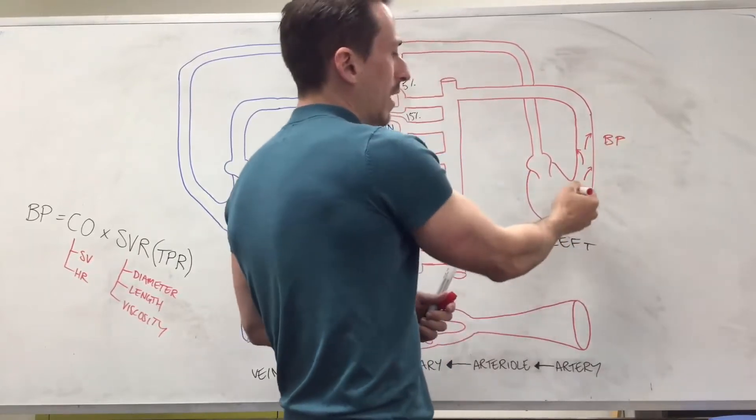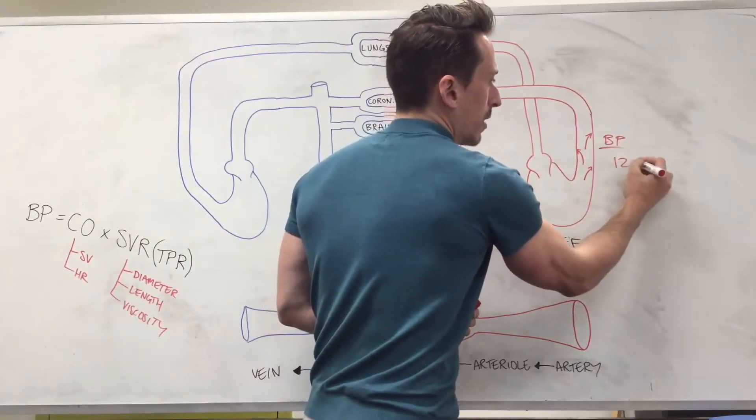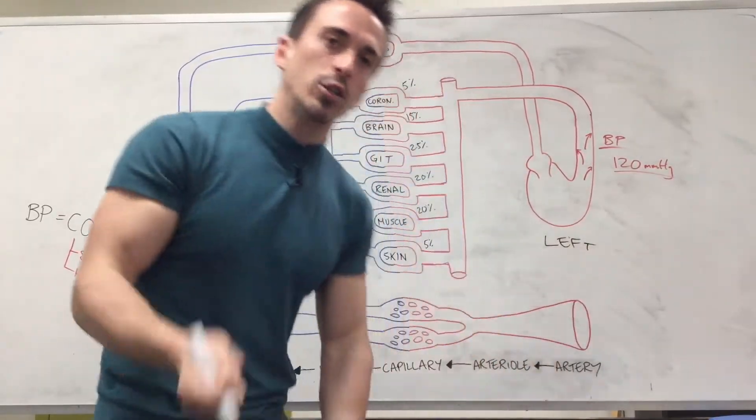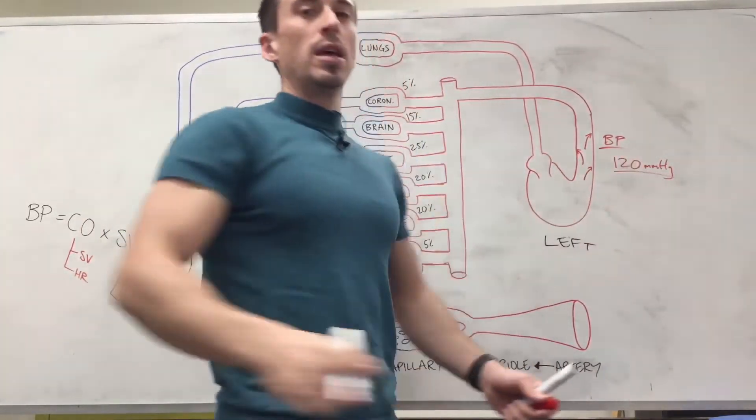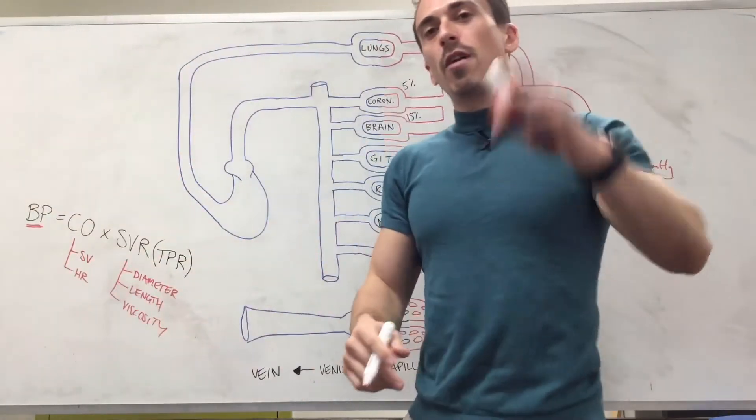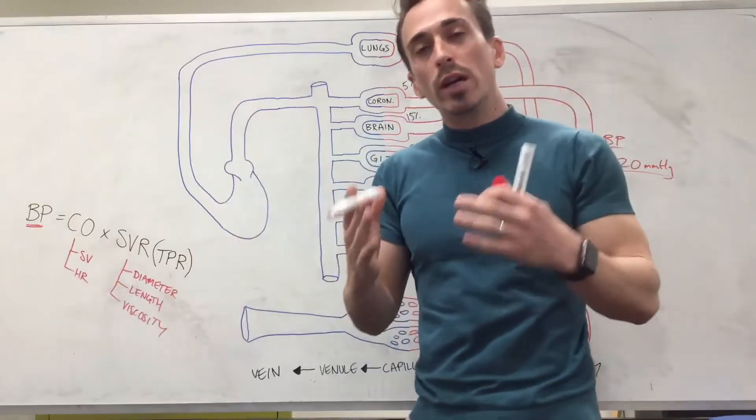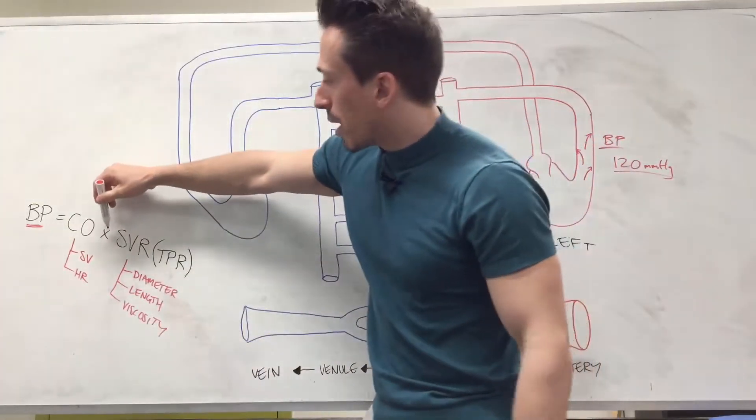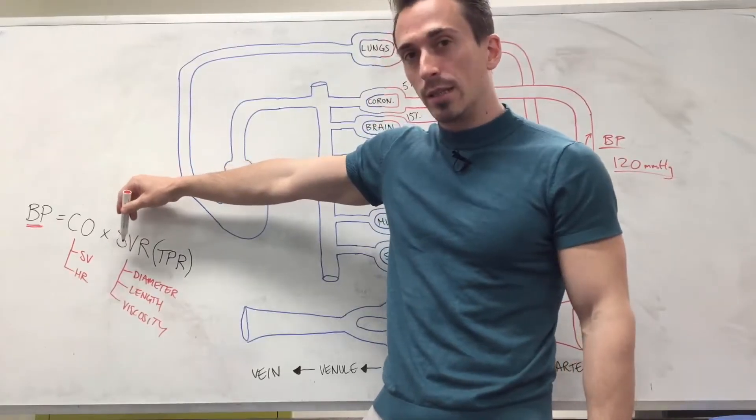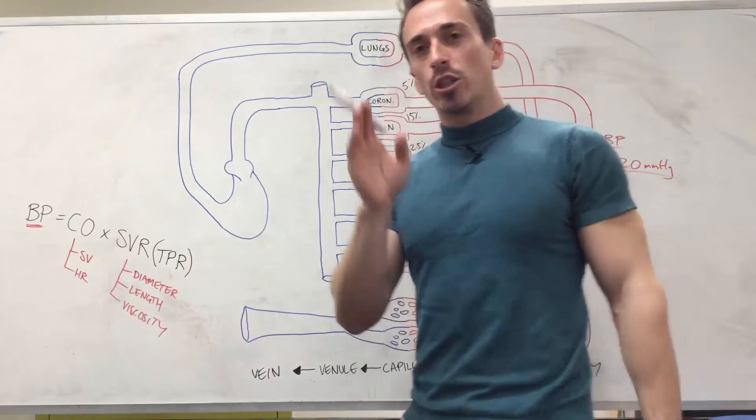We know here from the left ventricle to the aorta that blood pressure is going to be around about 120 millimeters of mercury under its strongest contraction. Now this blood pressure we can gather from an equation which involves cardiac output, the amount of blood we eject every minute, multiplied by what we're talking about today: systemic vascular resistance. Let's have a look at what systemic vascular resistance actually is.